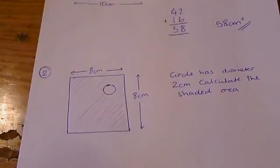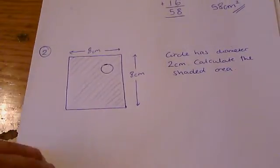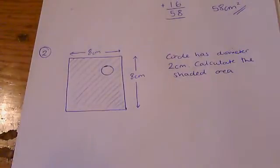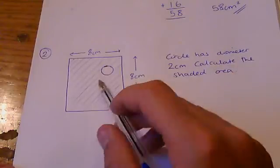Let's have a look at this second one. This is meant to be, I don't know, like a card that's had a hole punched out of it, and we've got to work out the area. It says if the circle has diameter 2 centimeters, calculate the shaded area.